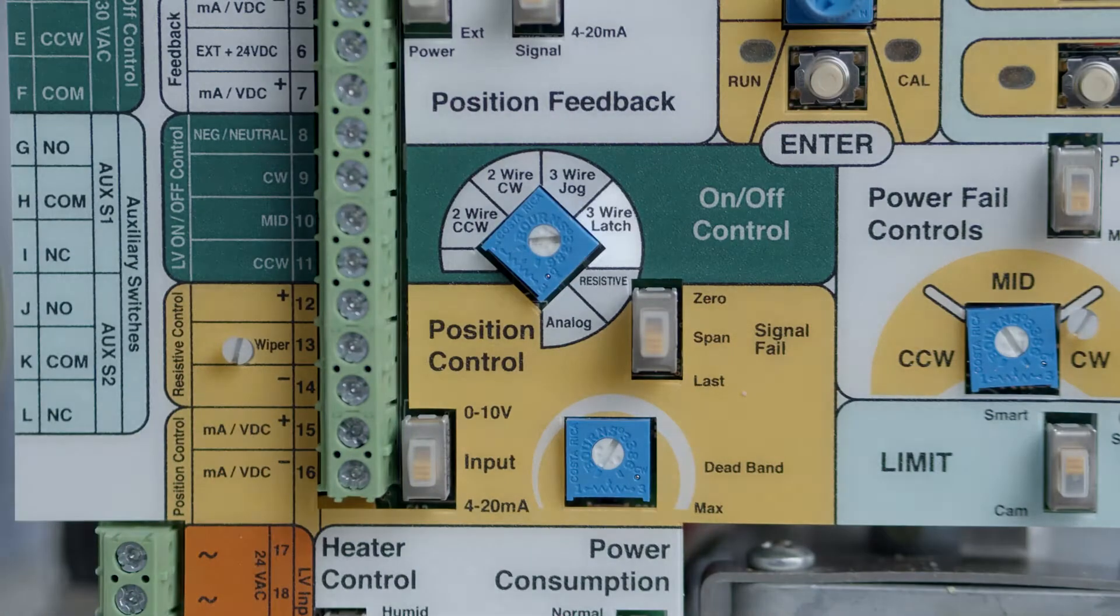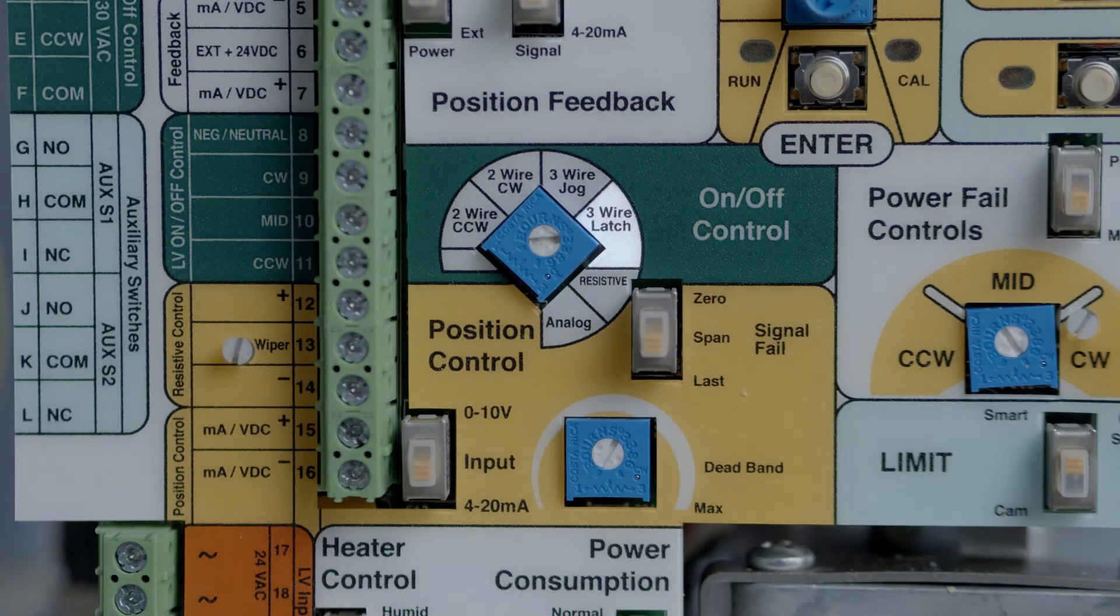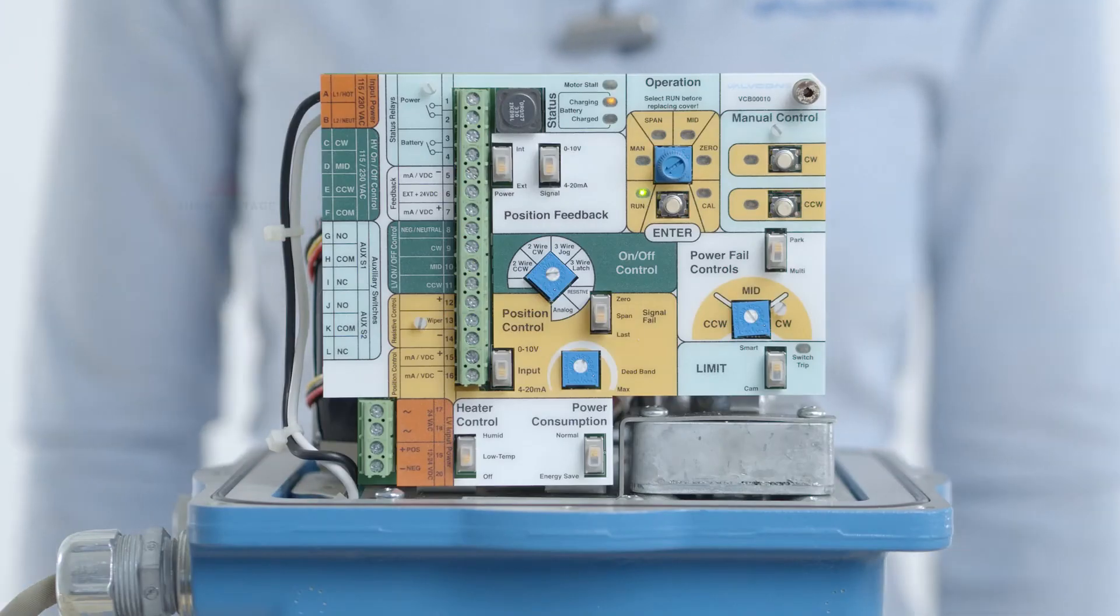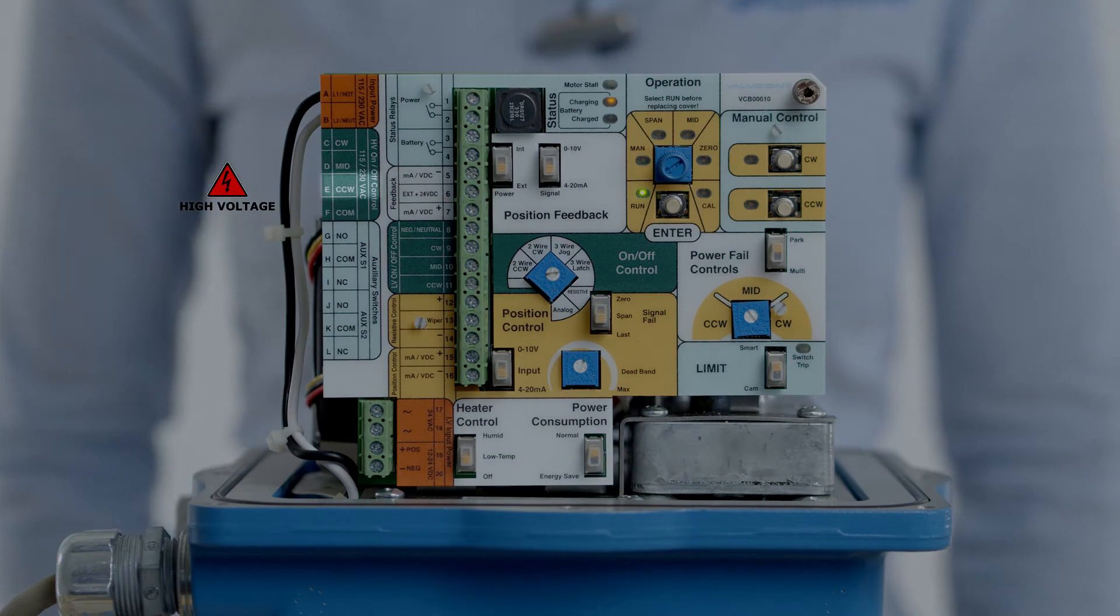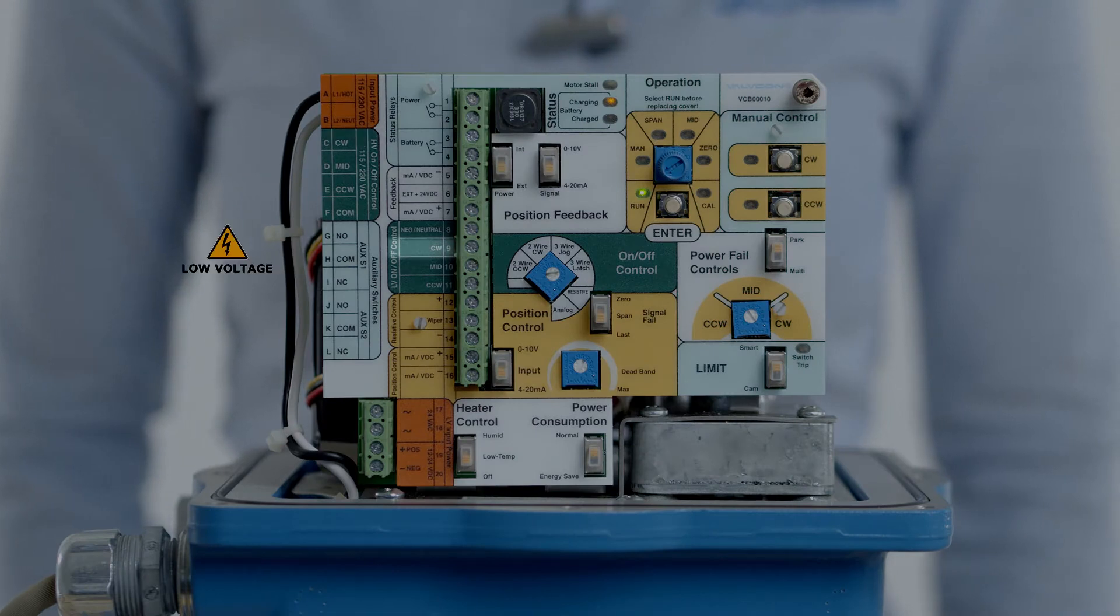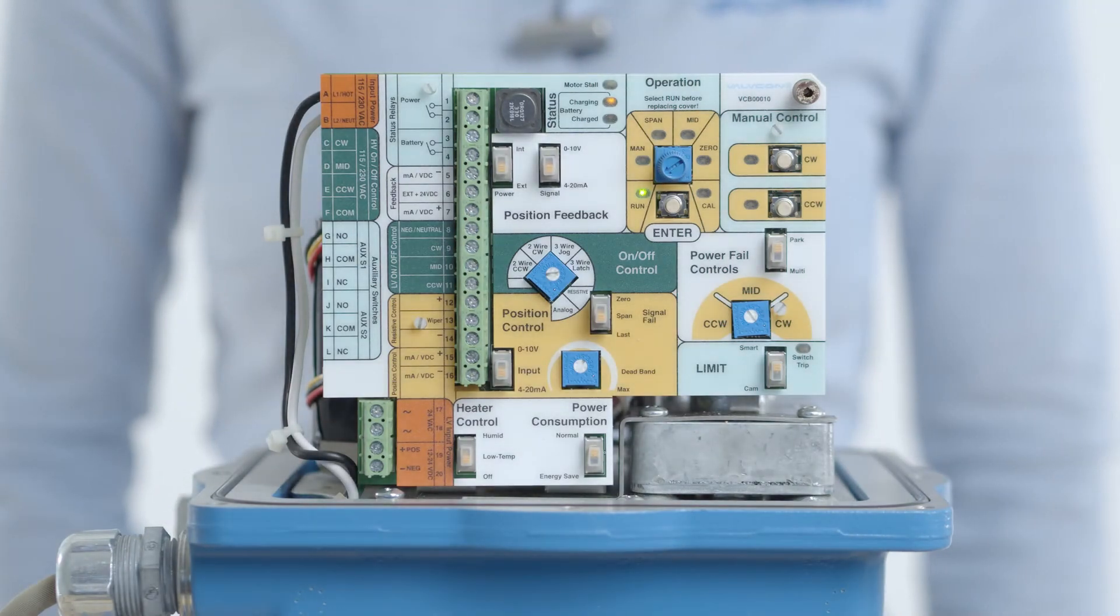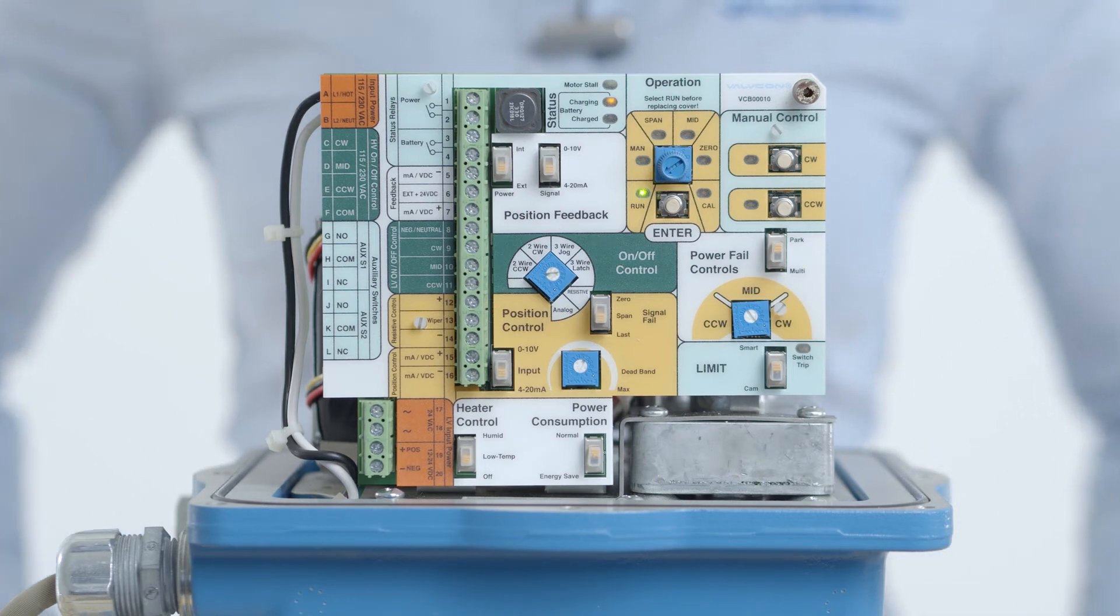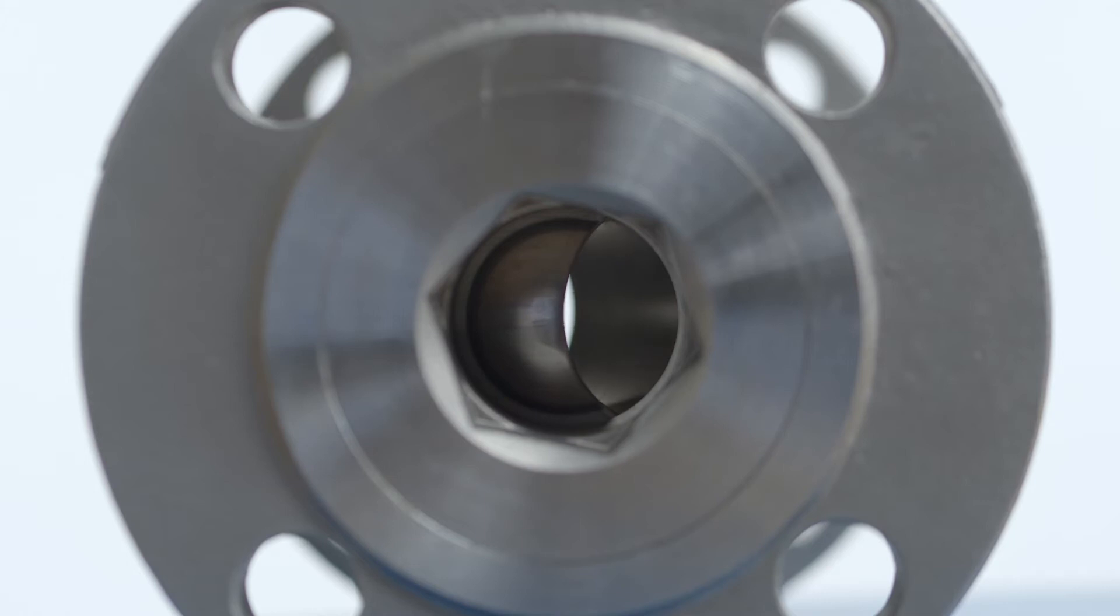In three-wire latch mode, the actuator will drive counterclockwise when the CCW control power is momentarily energized and will drive clockwise when the CW control power is momentarily energized. The signal is latched after momentary application. If control power is removed mid-travel, the actuator will continue to drive in the last energized direction. The mid control terminal is ignored in three-wire latch mode.